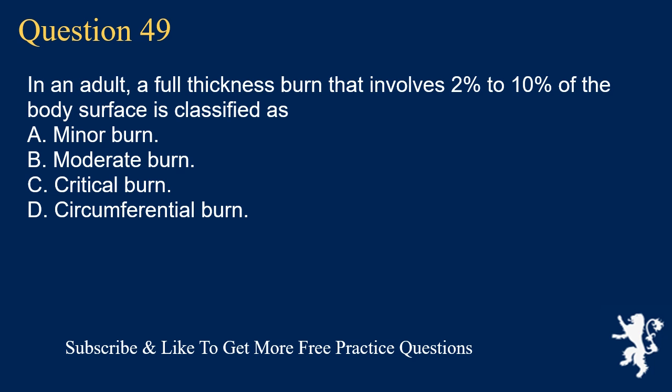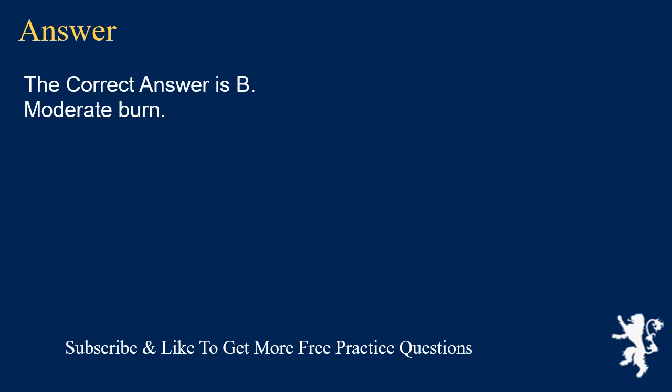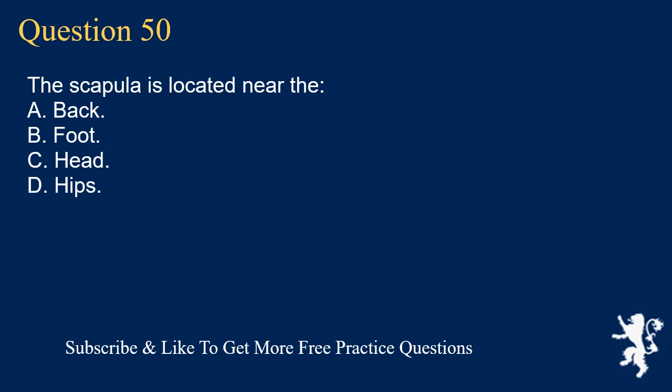Question 49. In an adult, a full thickness burn that involves 2% to 10% of the body's surface is classified as: A. Minor burn. B. Moderate burn. C. Critical burn. D. Circumferential burn. The correct answer is B. Moderate burn.